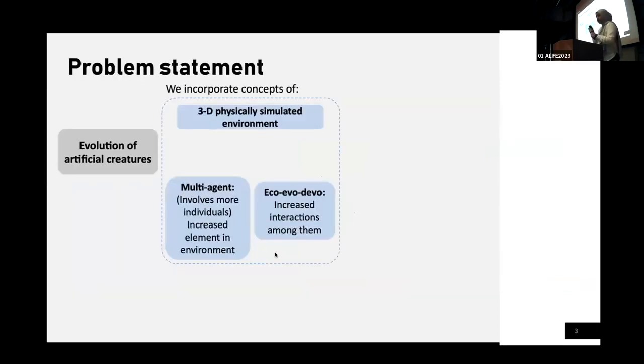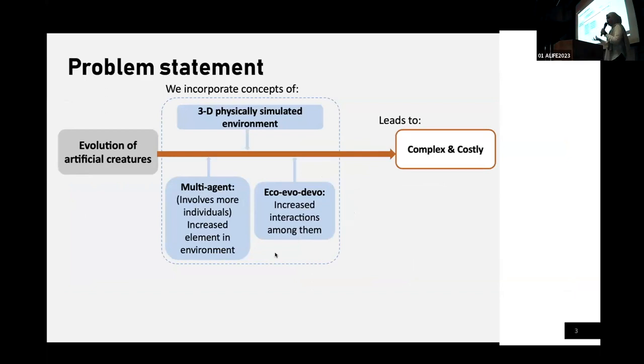Therefore, our interest is in evolving artificial creatures by considering several concepts of eco-evotable that increase the interactions between multi-agents in our environment, and also in a 3D physically simulated environment. However, by having all of these various factors, it actually has caused the increase in the evaluation cost to evolve our creature, both in a physical simulation, and this is not negligible.